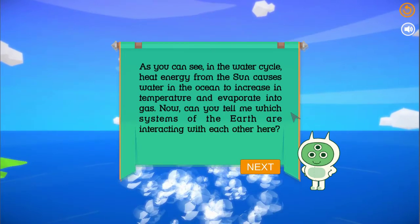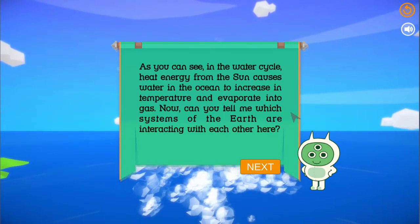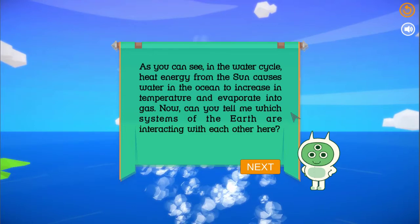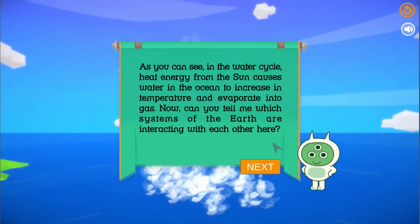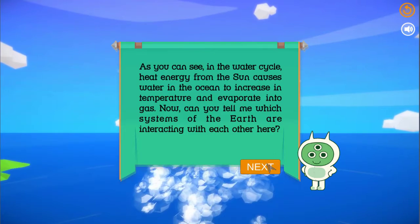As you can see, in the water cycle, heat energy from the sun causes water in the ocean to increase in temperature and evaporate into gas. Now, can you tell me which systems of the Earth are interacting with each other here?